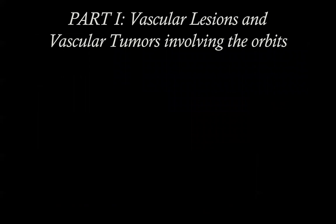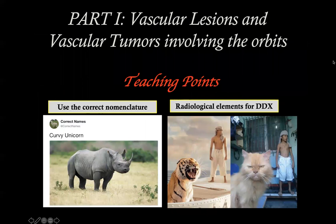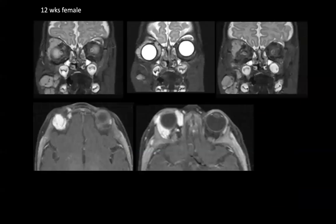I will start with vascular lesions and vascular tumors involving the orbits. An important teaching point: please use the correct nomenclature — it's very, very important. Sometimes there are mistakes in the literature, so you need to use the right names for the right entities. There is no such thing as a curvy unicorn, and the same applies to vascular lesions and vascular tumors in the head and neck region and the orbit in particular.